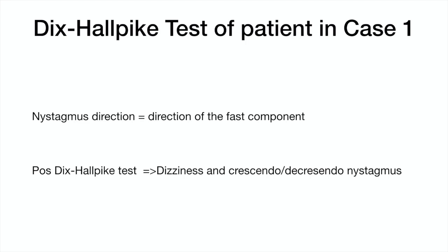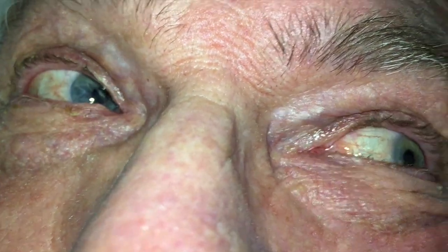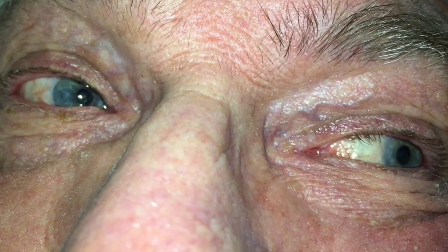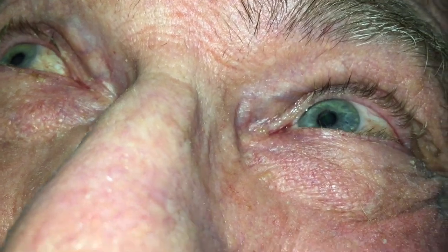Here is the actual Dix-Hallpike test of case 1. When the patient is placed in the Dix-Hallpike position with his left ear down, there is a couple of seconds delay before the nystagmus starts — this is called a latency. The nystagmus seen is more rotational when he looks towards his downward ear, and changes to more vertical upwards when he looks towards his upward ear. It only lasts about 15 seconds.